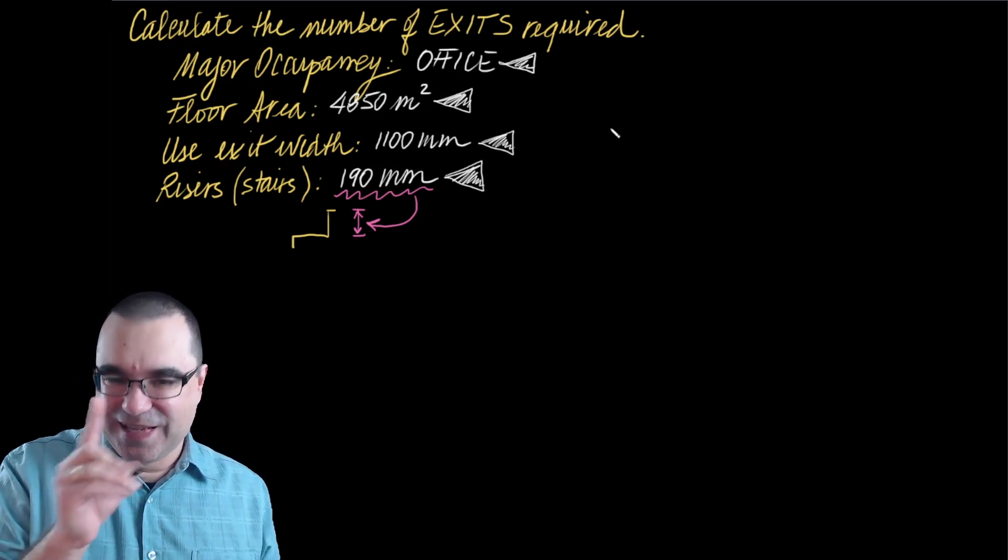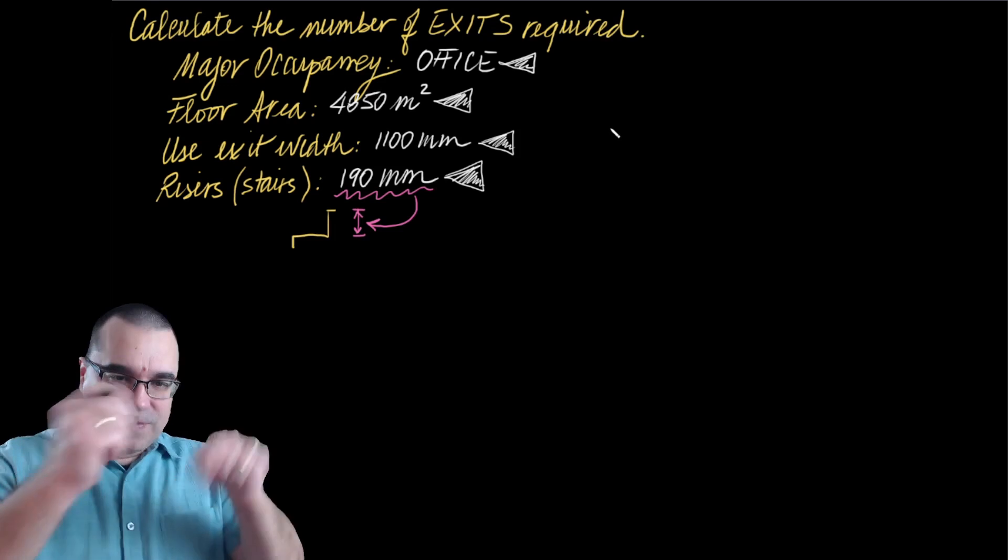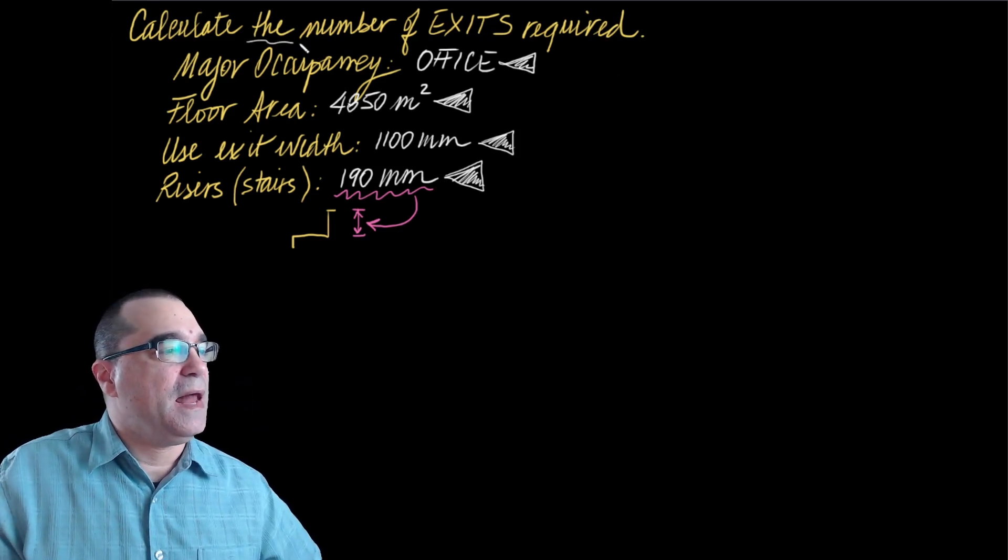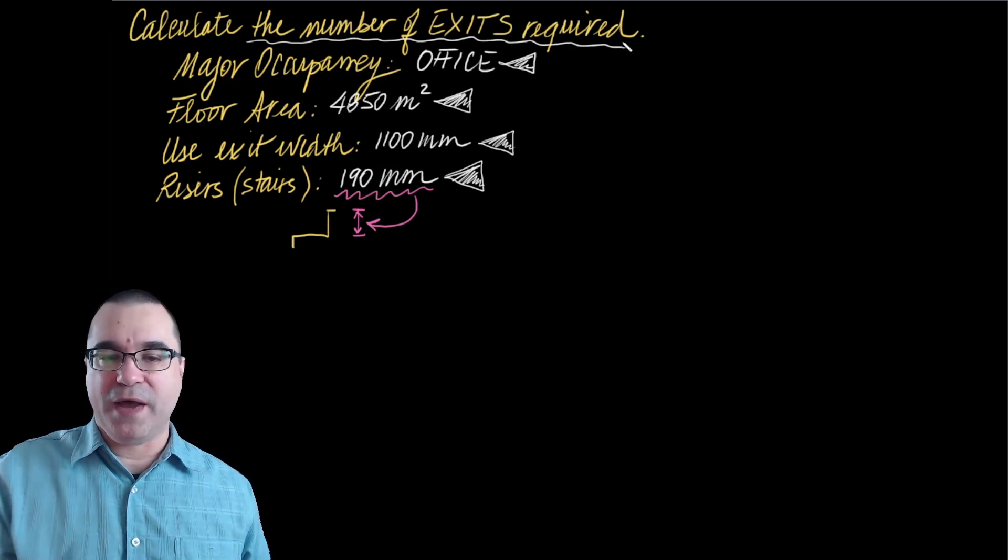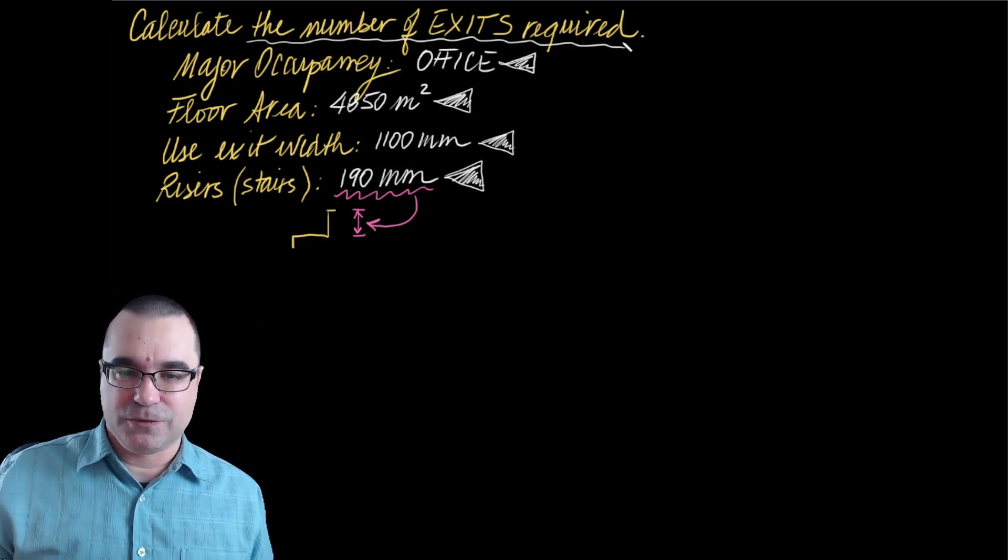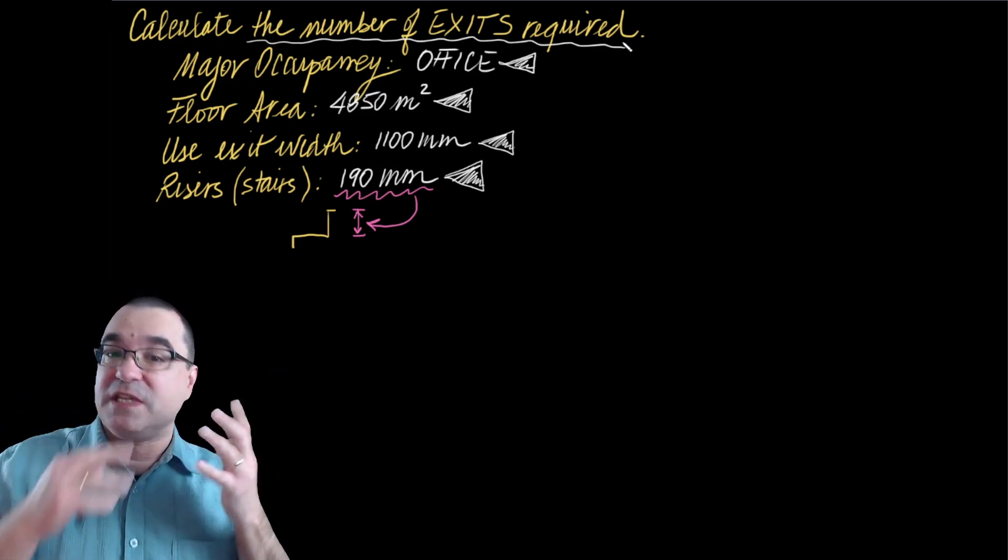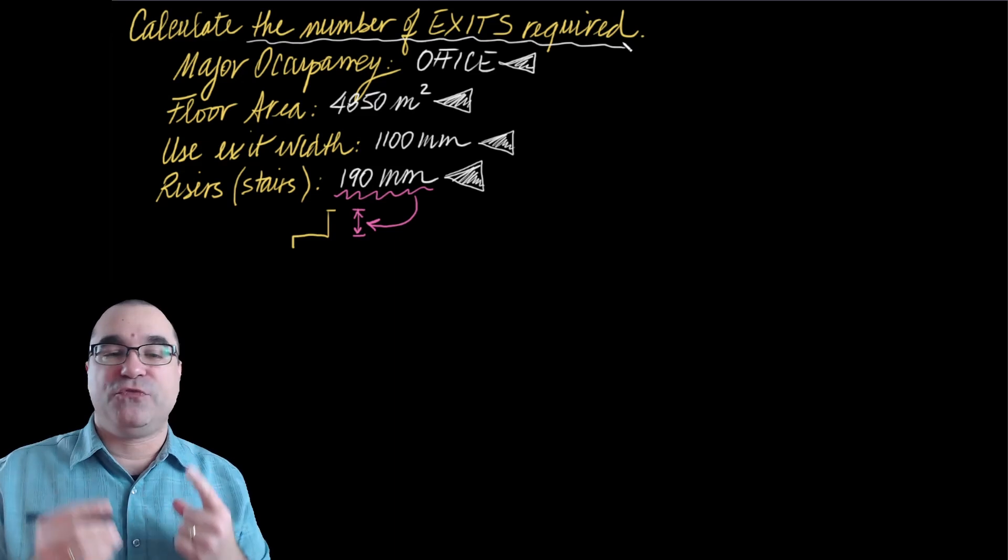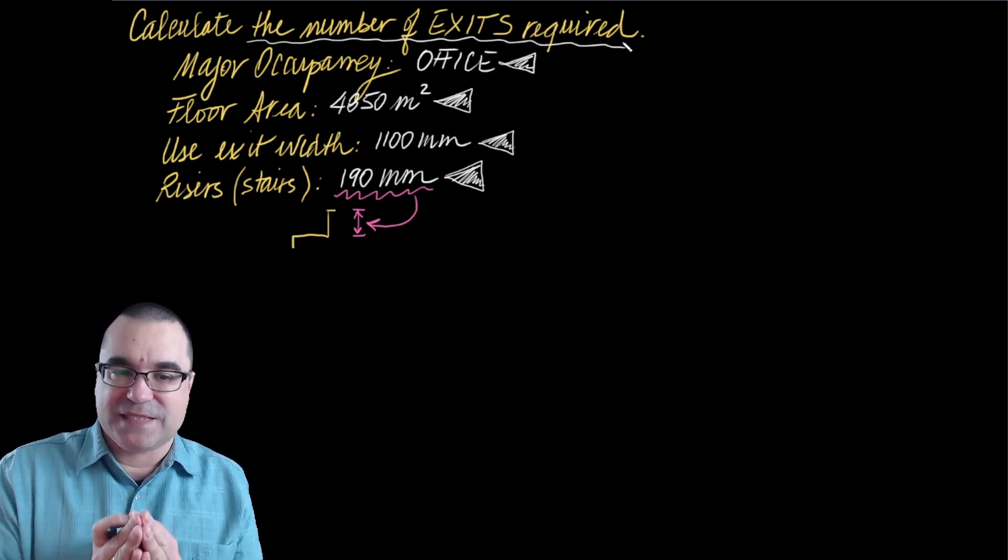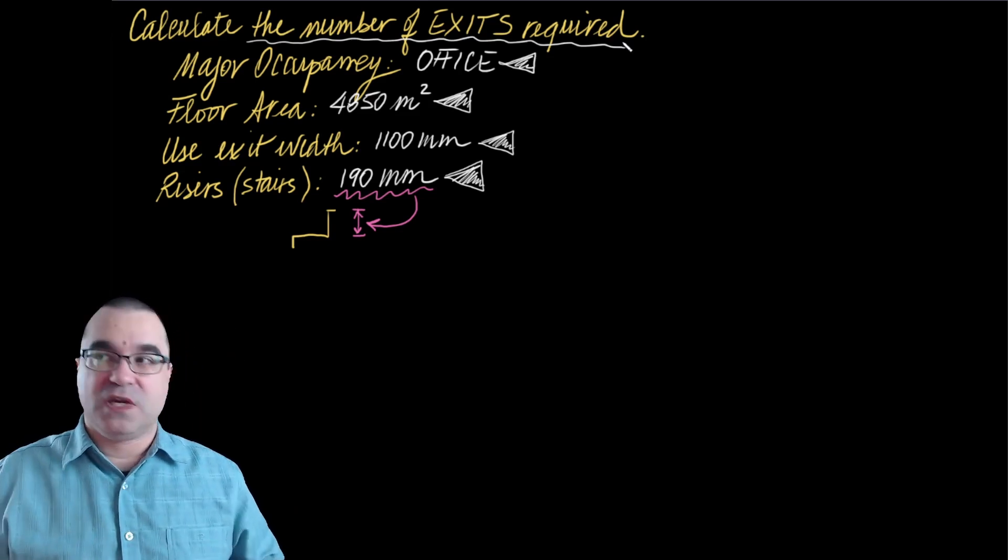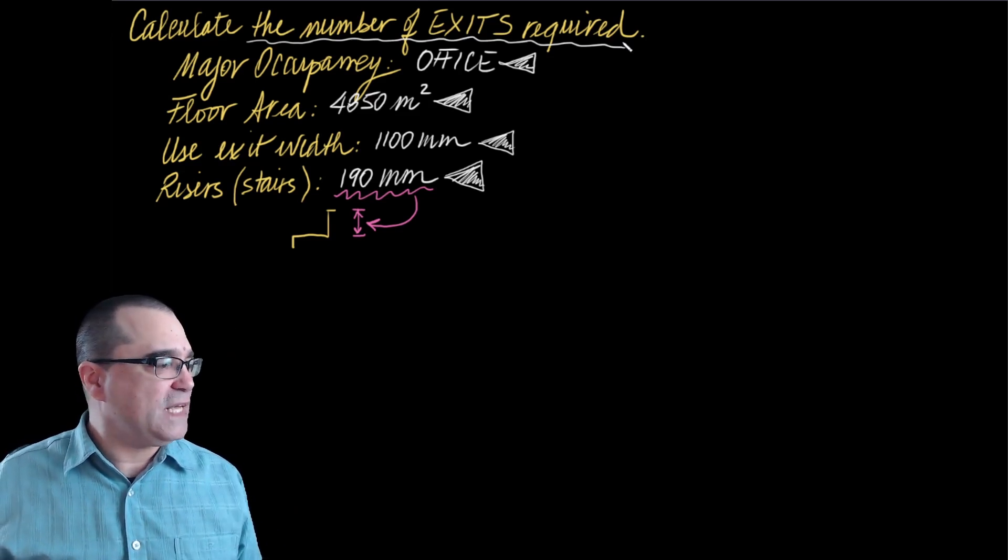What we're being asked in this kind of backwards question based on what we've done so far is to calculate the number of exits required given this scenario. So we're going to use what we've learned so far from the lecture video, the course notes, and the other examples to figure out how many exits, what's the smallest number of exits that we must use for this question.